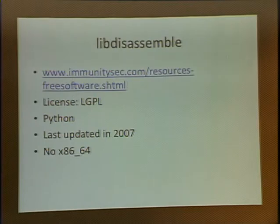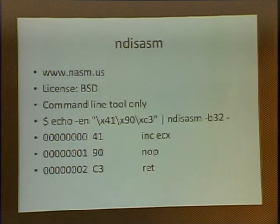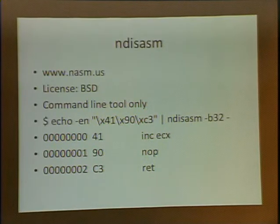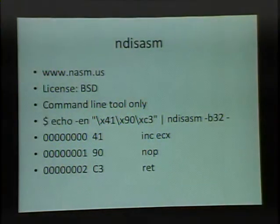There's also lib disassemble, written in Python. It hasn't been updated in a long time, it doesn't have tests, and there's no documentation beyond a readme that just says 'run this command.' But it's there if you want to try it. Then there's the NASM disassembler. It's BSD licensed and it's just a command line tool. Anybody who's done a lot of ROP gadget finding has probably called this in a loop and grepped for stuff. It doesn't have a direct API — it's meant to be a tool, not a library.